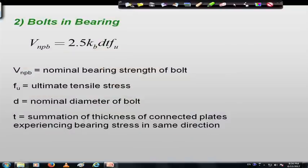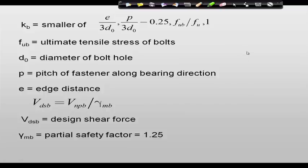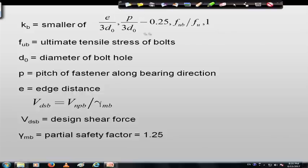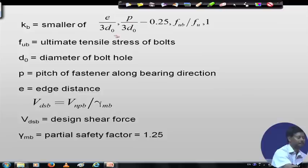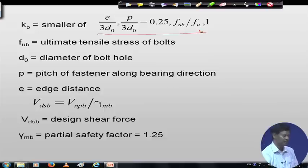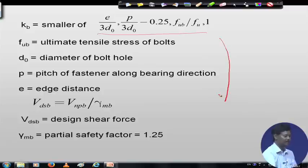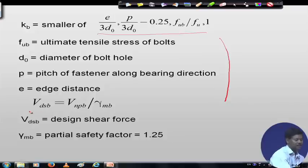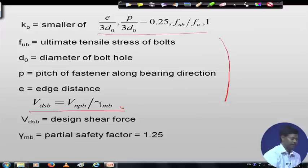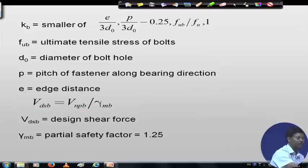The bearing strength is calculated using the value of KB, which is the minimum of: E/(3D0), P/(3D0) − 0.25, FUB/FU, and 1. The design shear force due to bearing is V_DSB = V_NPB / γMB, where γMB = 1.25.